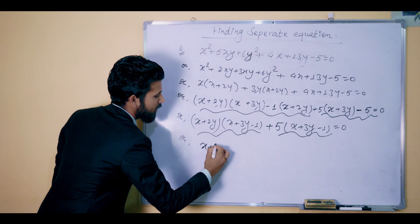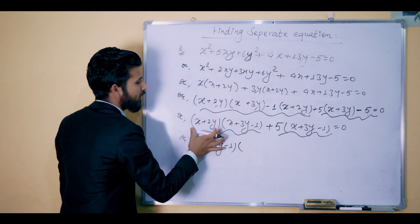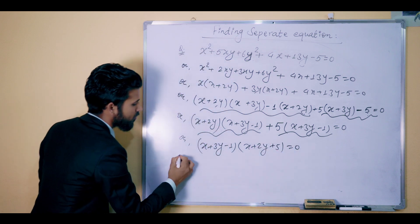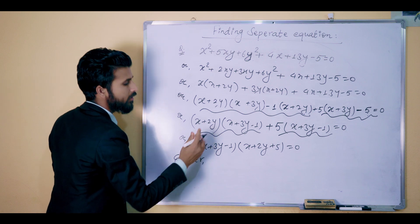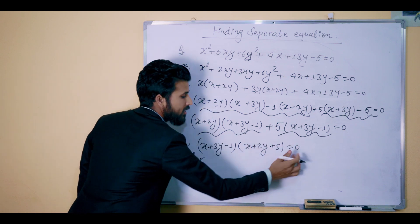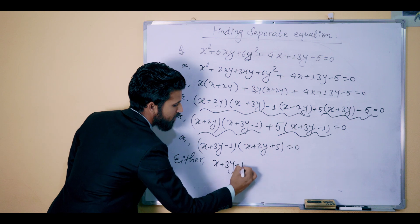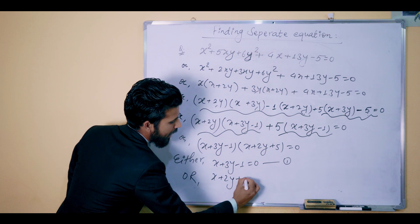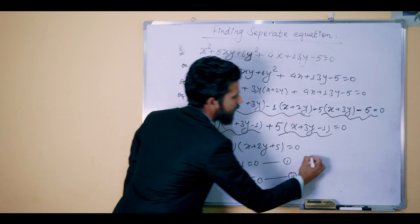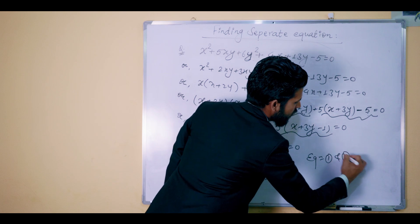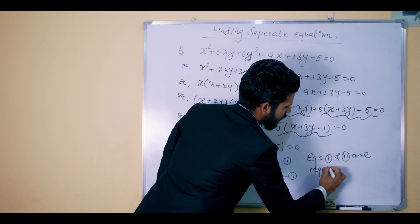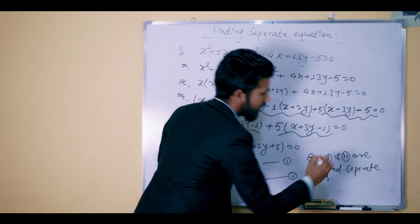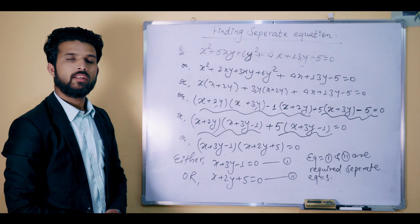x plus 3y minus 1 equals 0 — this is Equation 1. x plus 2y plus 5 equals 0 — this is Equation 2. Equation 1 and Equation 2 are the required separate equations represented by the given single equation. Thank you.